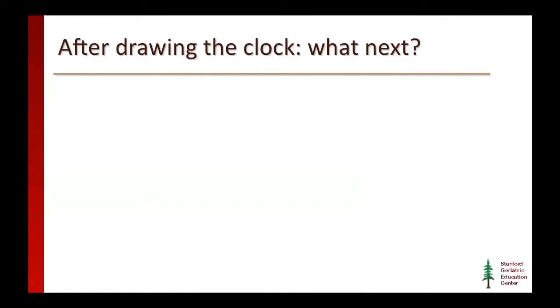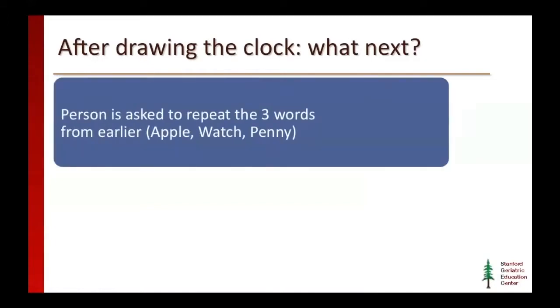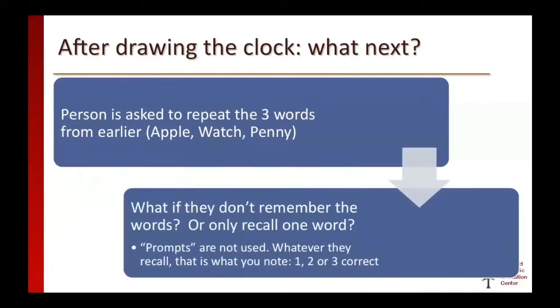After drawing the clock, ask the person to repeat the three words used at the first part of the test: apple, watch, penny. If they don't remember the words or only recall one, you're not supposed to prompt them or help them remember. You just note down what they said, whether they were able to recall the words or not.